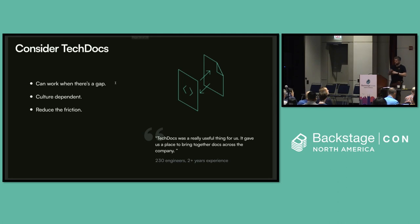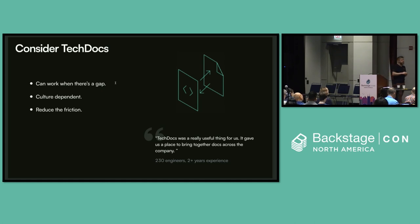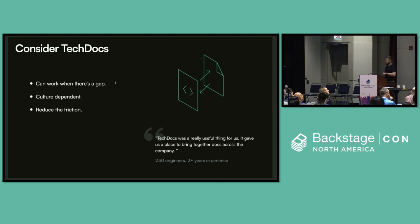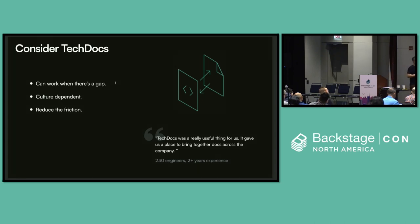TechDocs worked in about half the companies that tried it. The main difference between those where it worked and those where it didn't was the lack of an existing technical documentation tool that people were already happy with. It also needs a bit of a culture shift — it is a docs-as-code approach, and it's a bit more difficult to edit documentation since you have to open a pull request and be semi-technical. Organizations who did succeed with TechDocs also invested in reducing friction, for example by creating a scaffolder template that allowed people to easily add a docs directory and mkdocs config file to their repositories.